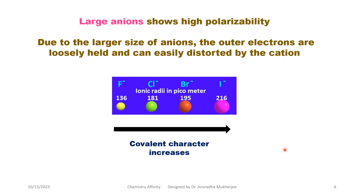Large anions show high polarizability because the large size of the anion means the outer electrons are loosely held and can be easily distorted by the cation. For example, any ionic compound containing I⁻ as the anion will have high polarizability, meaning it shows more covalent character. Conversely, any compound with F⁻ as the anion will show more ionic character.